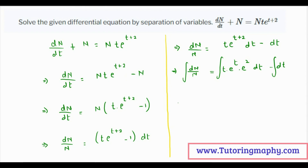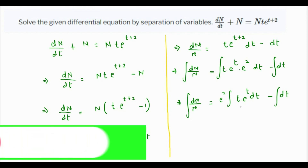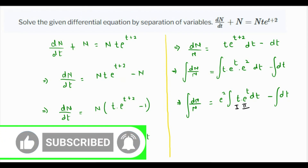The left side becomes dn over n. On the right side, e squared is a constant so it can be taken out. We have e squared times the integral of t times e raised to t dt, minus the integral of dt. Since this is a multiplication of two different functions, we are going to use integration by parts, where t is the first term and e raised to t is the second term.